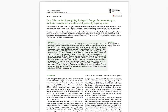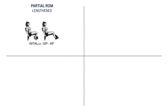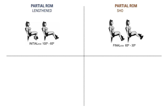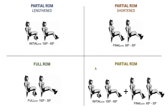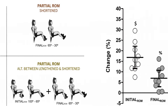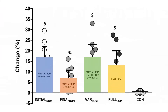For example, this study compared the effects of performing leg extensions with either partial range of motion in the lengthened position, partial range in the shortened position, full range of motion, or alternating between the lengthened and shortened partial ranges. It was found that all groups including the lengthened range saw greater increases in quadriceps cross-sectional area compared with the shortened partials, and there seemed to be slightly superior growth in the two groups including lengthened partials compared with the full range of motion group.